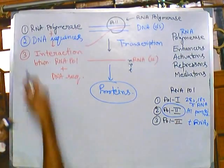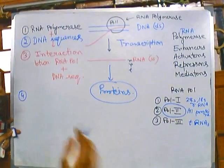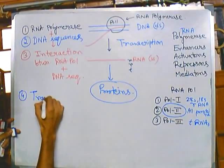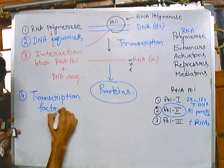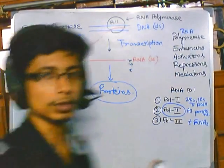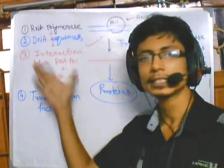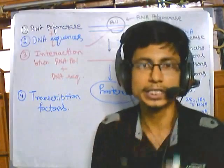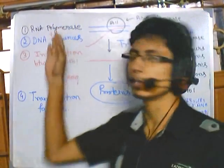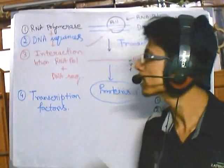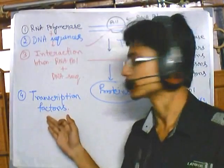The fourth important element is transcription factors. So the recipe for successful RNA production in the eukaryotic system requires: RNA polymerase and its accessibility, the proper DNA sequence, and transcription factors.